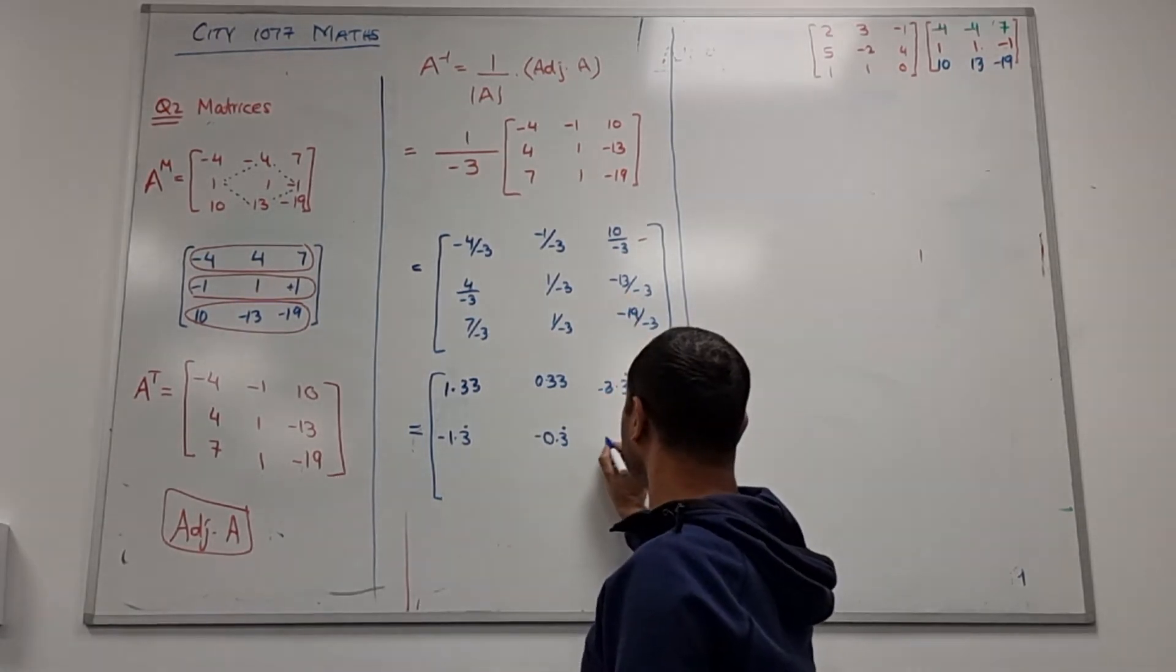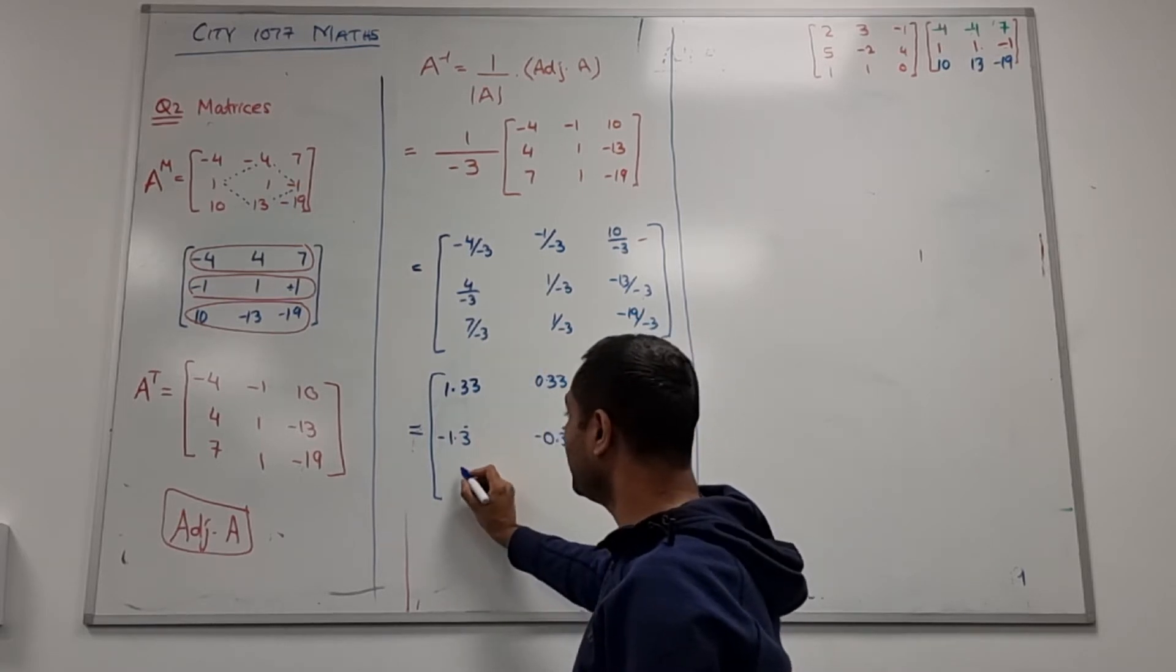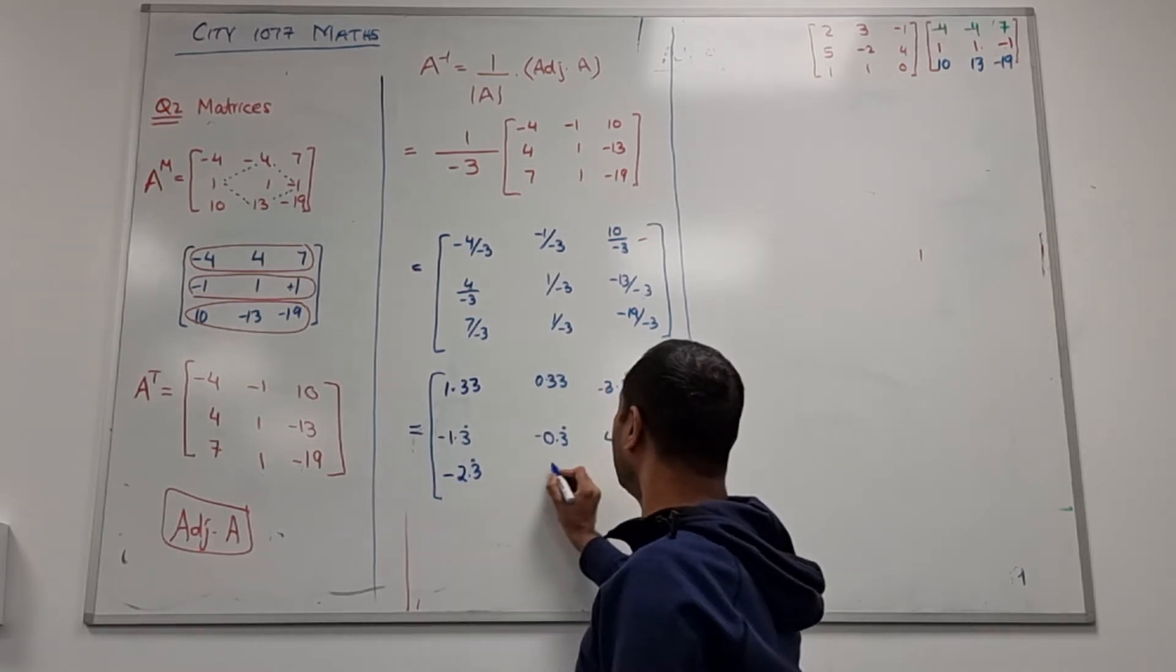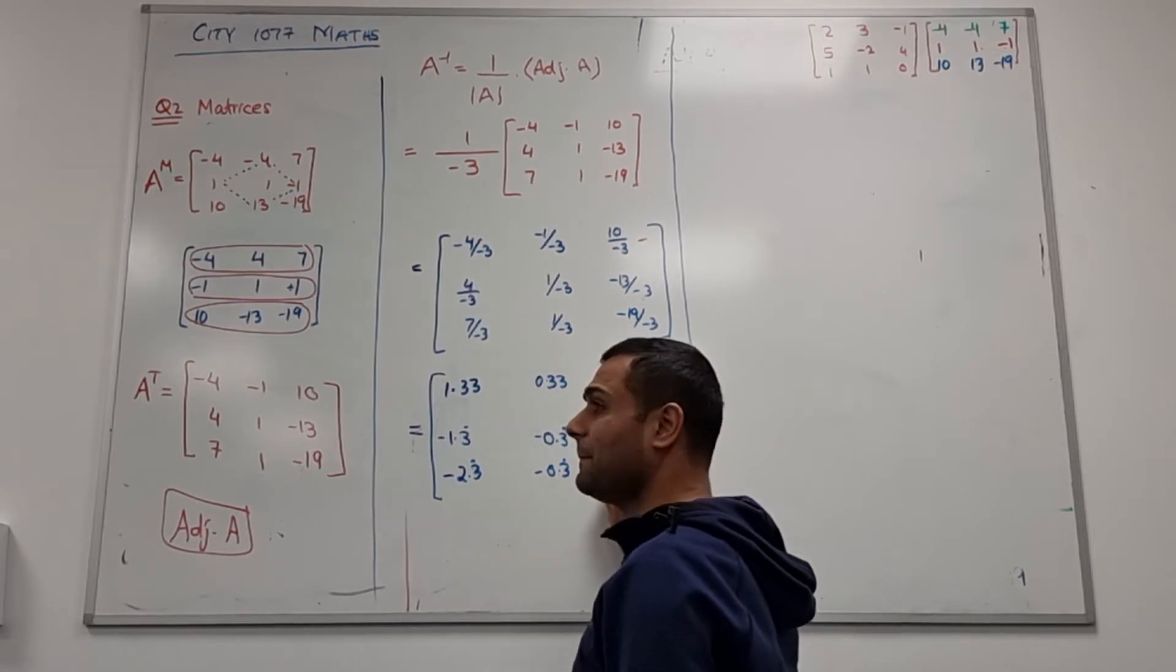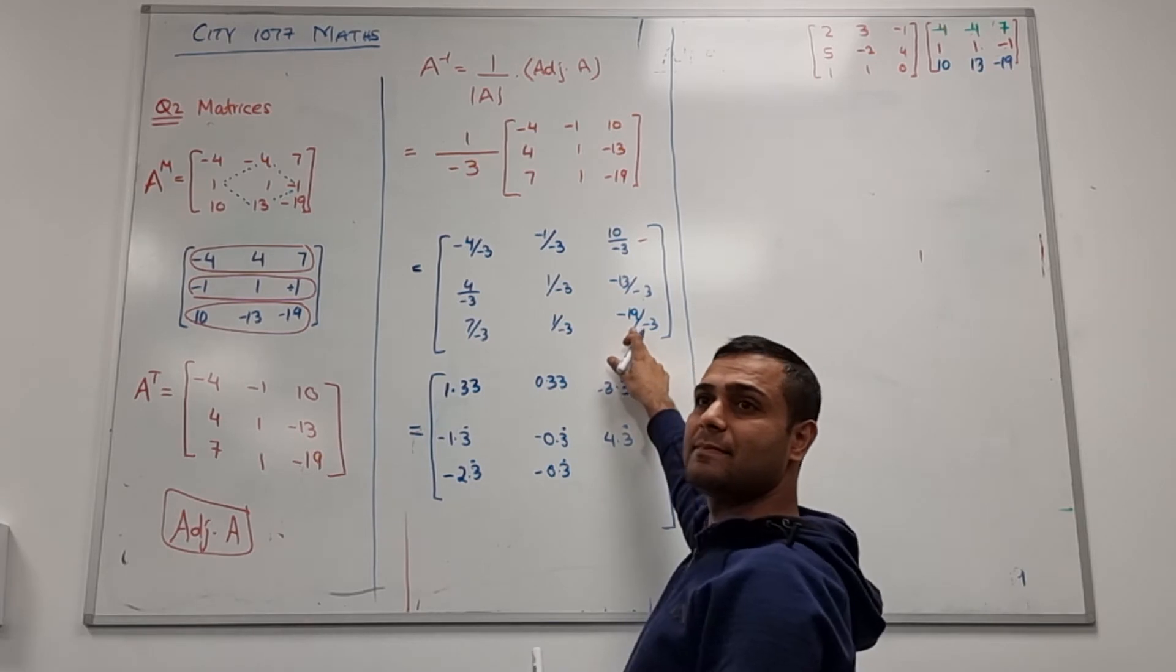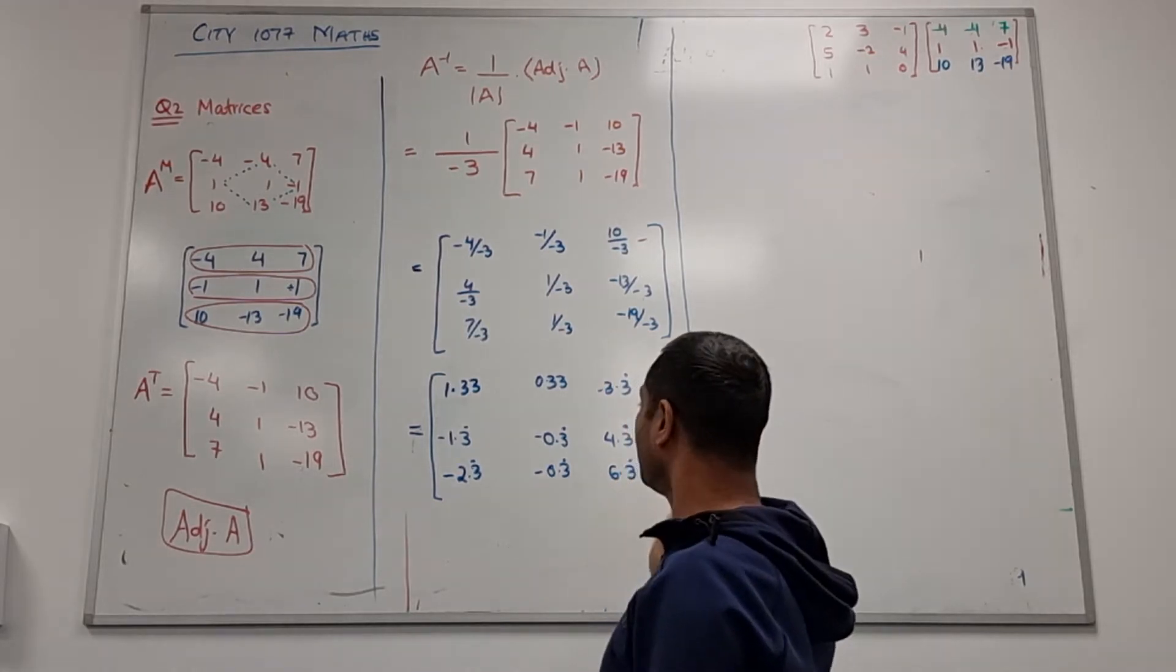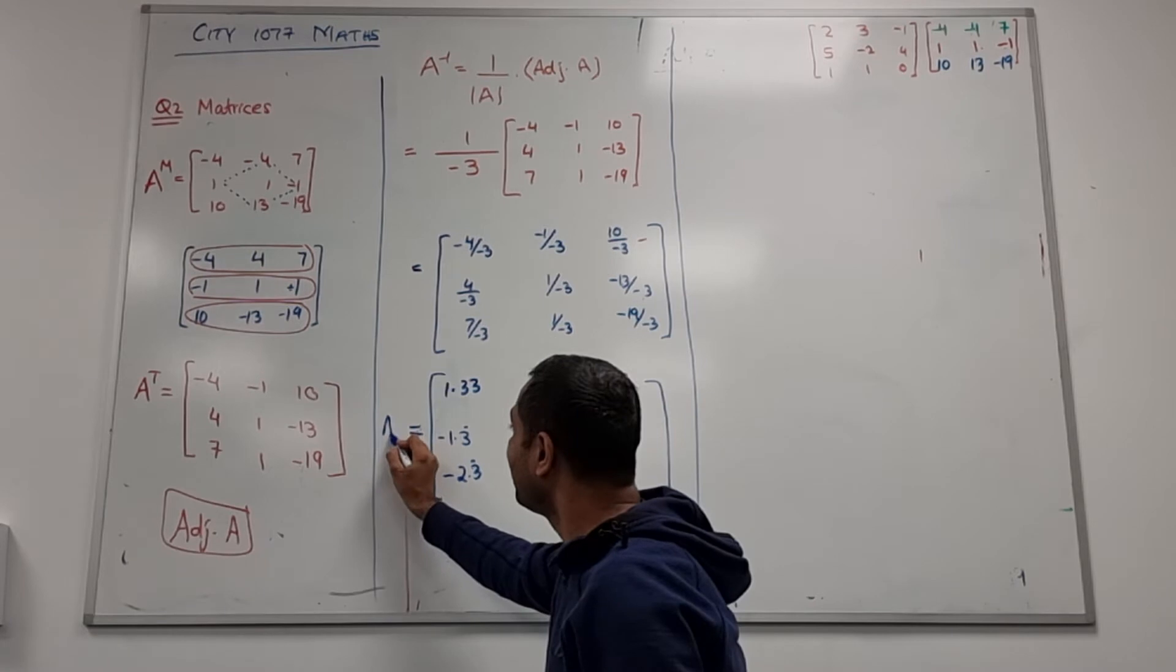4.33. 7 over minus 3? Minus 2.33. That will be minus 0.3 recurring. 19 over 3? 6.33. So we got all in decimal. Now this is my A inverse.